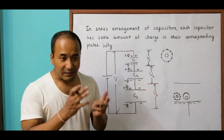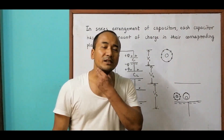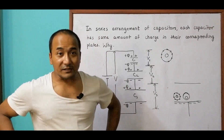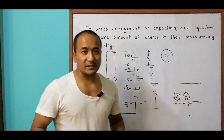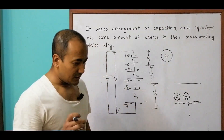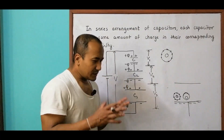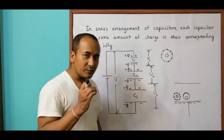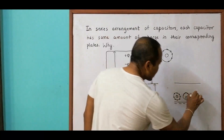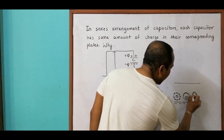When matter accumulates somewhere, the shape changes — for example, a double chin when fat accumulates, or the waistline expanding outward. Similarly here, the electrons are trying to go up while the positive nucleus is pulled down, so the molecule changes shape. That's why the molecule deforms in this way.